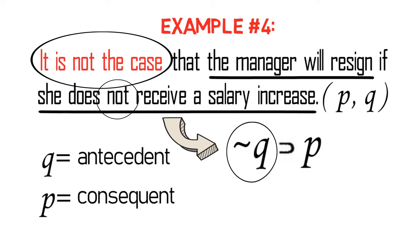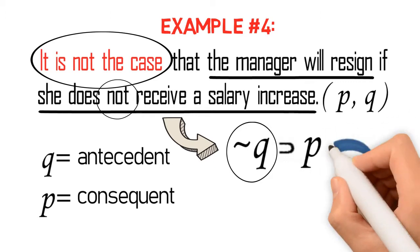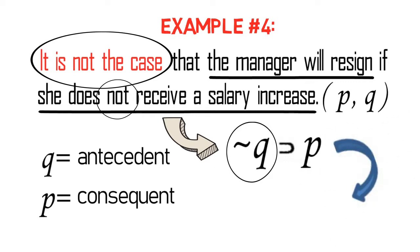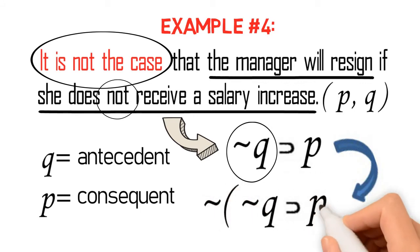Now, since the negation sign 'it is not the case' precedes the entire proposition, then again the entire proposition must be negated. Thus, we finally symbolize the proposition — 'it is not the case that the manager will resign if she does not receive a salary increase' — as follows: Not (not Q then P).